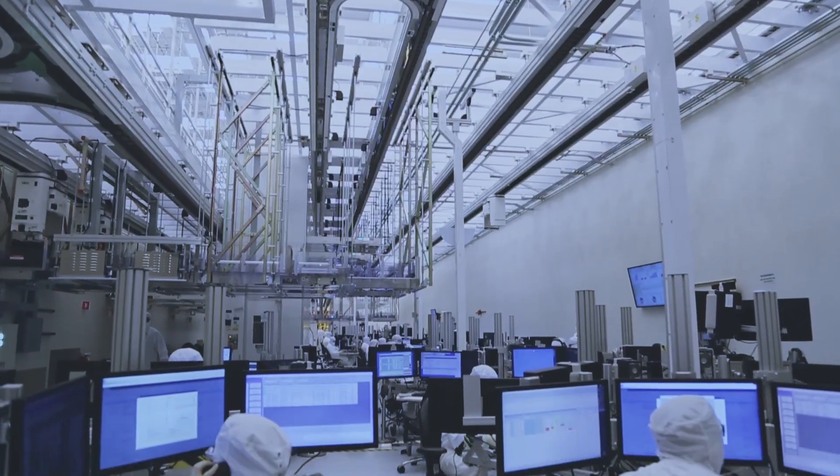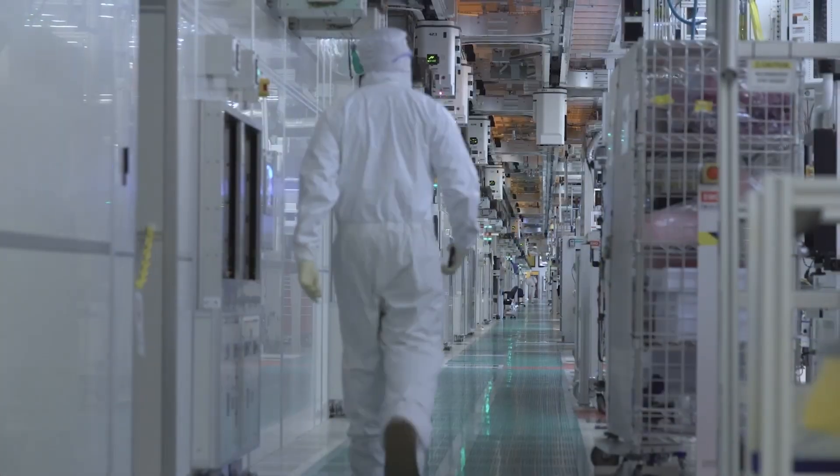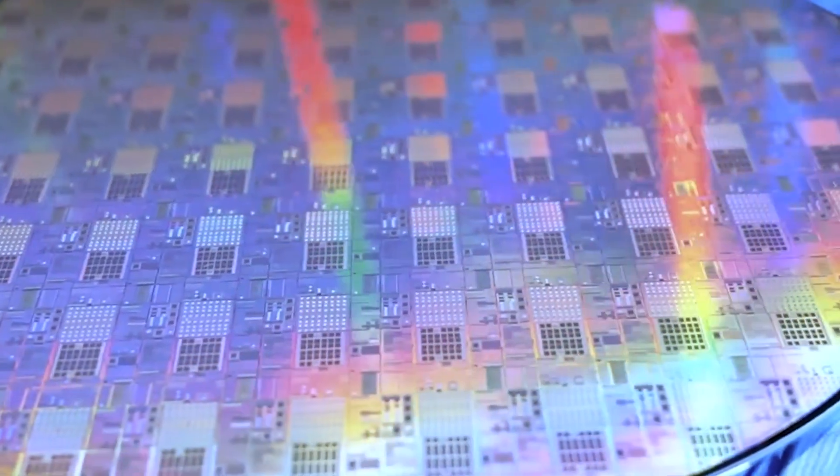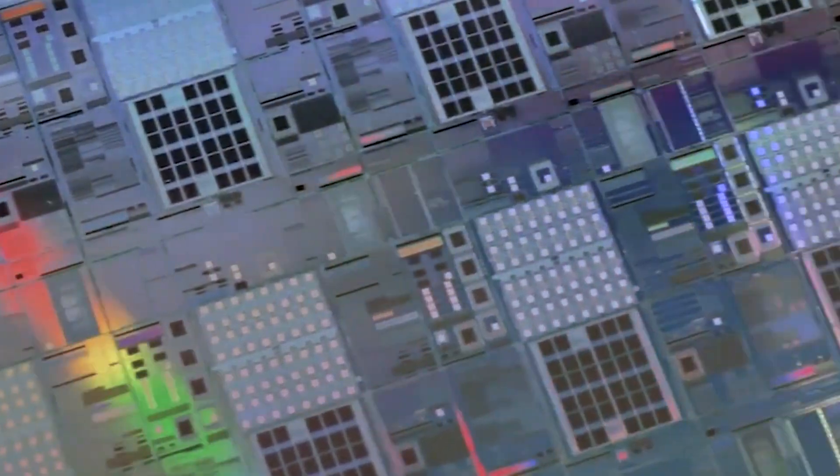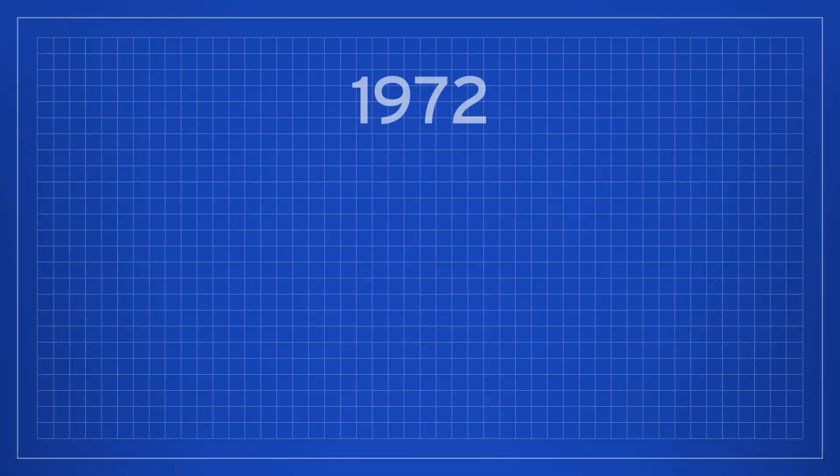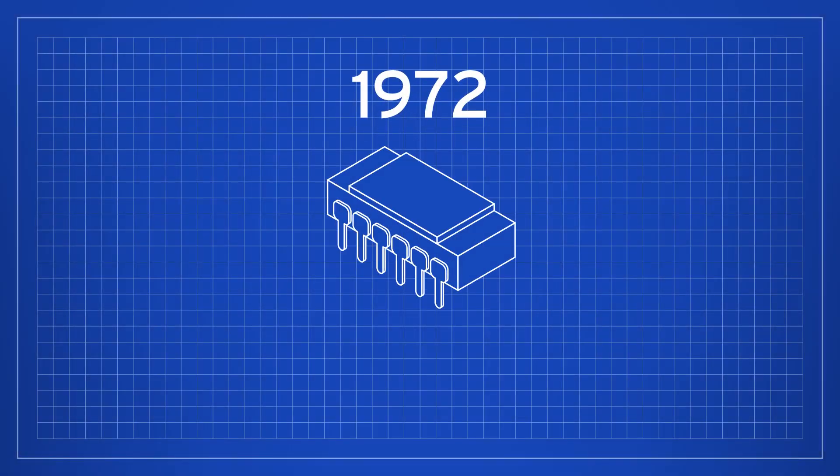Semiconductor manufacturing is one of the most complex mass production processes in human history. As chips become more sophisticated, the techniques used to produce them become more extensive and complicated. In 1972, the first commercially viable microprocessor contained about 2,000 transistors with critical dimensions of 10,000 nanometers.